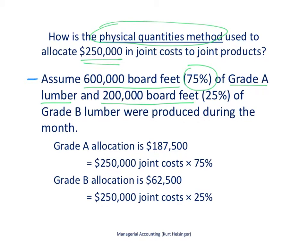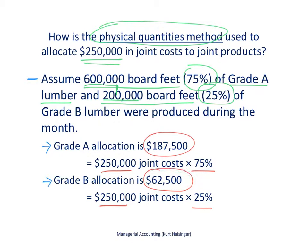We'll do the same for grade B lumber, with a 25% proportion, because we've got 200,000 board feet of grade B lumber divided by the total 800,000, which is 25%. Looking at the allocation: for grade A lumber, $250,000 times 75% equals $187,500 in joint costs allocated to grade A. For grade B lumber, $250,000 times 25% equals $62,500 in joint costs allocated to grade B.